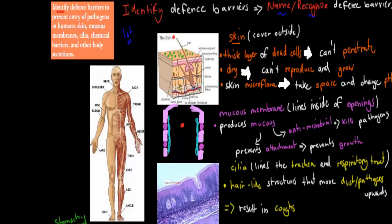The skin covers the vast majority of our body, and there are some openings such as the mouth, anus, eyes, and ears. The skin helps prevent pathogens from getting into our blood. It is a thick layer of dead cells, so pathogens can't penetrate through them. Also, that whole environment is quite dry, which means it's not good for reproduction — pathogens can't grow and reproduce on that dry surface.